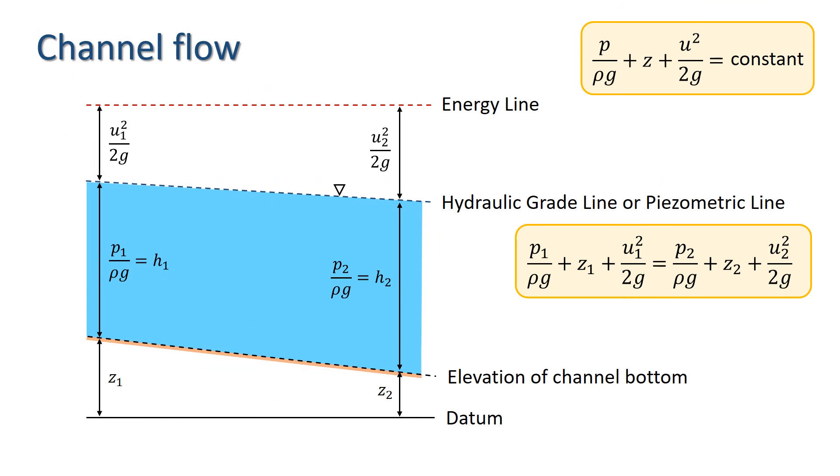In channel flow, the hydraulic grade line coincides with the water surface, which is what we might expect from hydrostatics, because we know that the hydrostatic head equals P over rho G. In this example, we have a smooth channel and no energy loss.